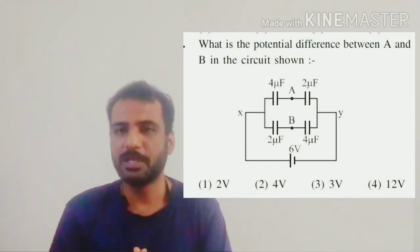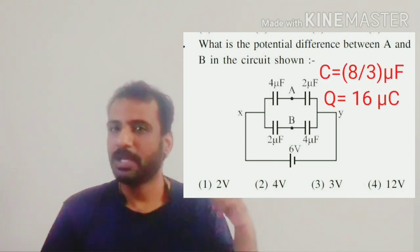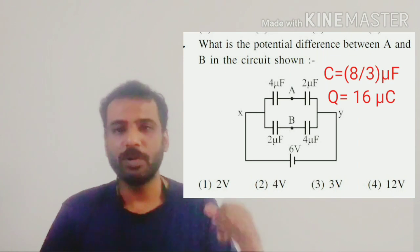So first let's find the total capacitance. The total capacitance of the given circuit is equal to 8 by 3 microfarad and the total charge is equal to 16 microcoulombs.